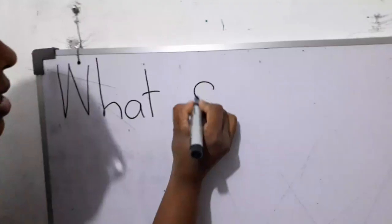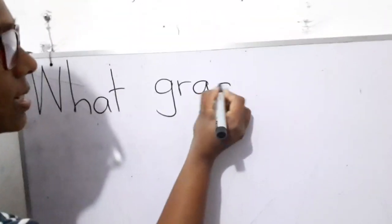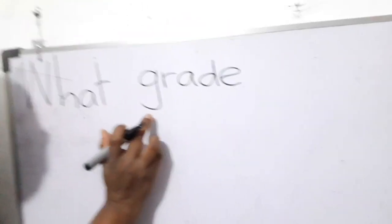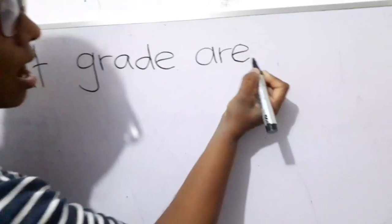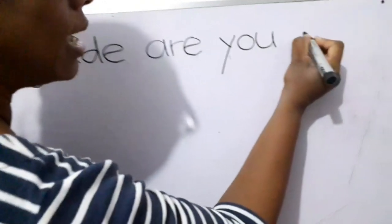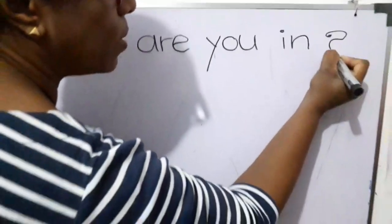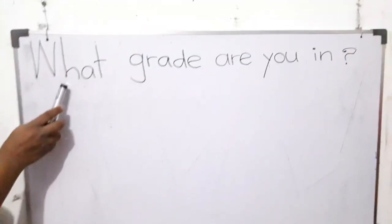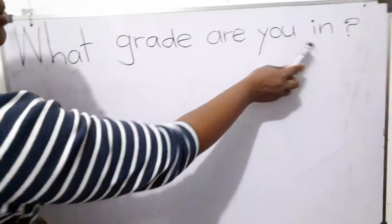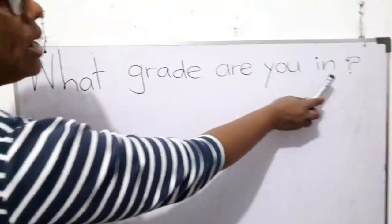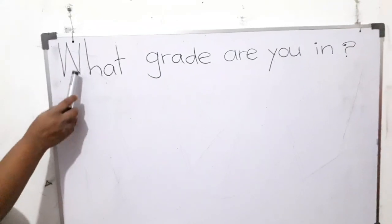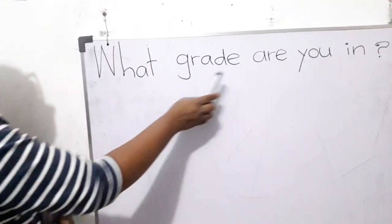Let's write. What grade — how do you write 'grade'? G, R, A, D, E — grade. Are you in? It's a question, so you have to put the question mark. What grade are you in? You must write the capital W. What grade are you in?